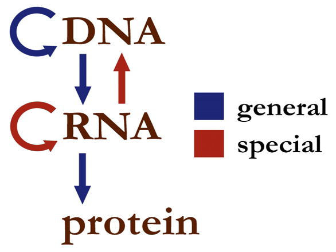In his autobiography, What Mad Pursuit?, Crick wrote about his choice of the word 'dogma' and some of the problems it caused him: 'I called this idea the central dogma for two reasons, I suspect. I had already used the obvious word hypothesis in the sequence hypothesis, and in addition I wanted to suggest that this new assumption was more central and more powerful. As it turned out, the use of the word dogma caused almost more trouble than it was worth. Many years later Jacques Monod pointed out to me that I did not appear to understand the correct use of the word dogma, which is a belief that cannot be doubted. I did apprehend this in a vague sort of way but since I thought that all religious beliefs were without foundation, I used the word the way I myself thought about it, not as most of the world does, and simply applied it to a grand hypothesis that, however plausible, had little direct experimental support.'